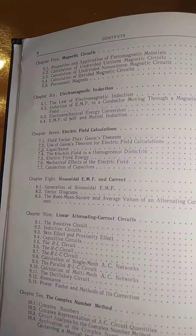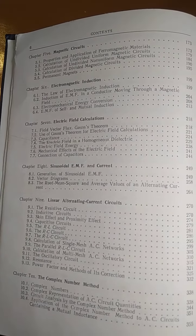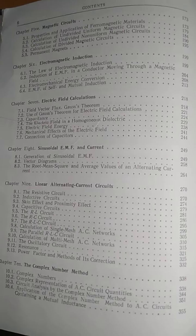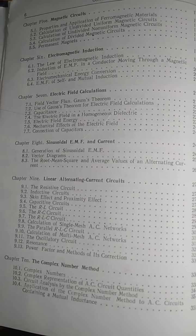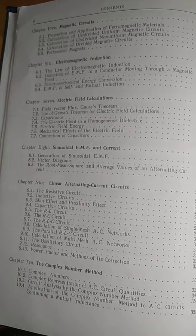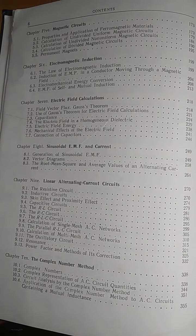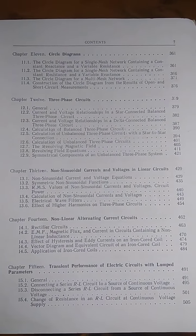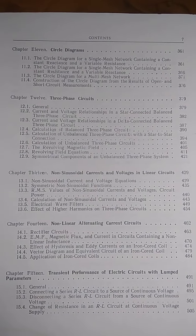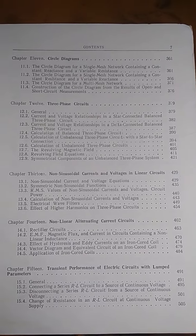Chapter 5 is magnetic circuits, electromagnetic induction, electric field calculations, sinusoidal EMF and current, linear alternating current circuits, the complex number method - I love complex number - then circle diagrams, three-phase circuits, non-sinusoidal currents and voltage in linear circuits.